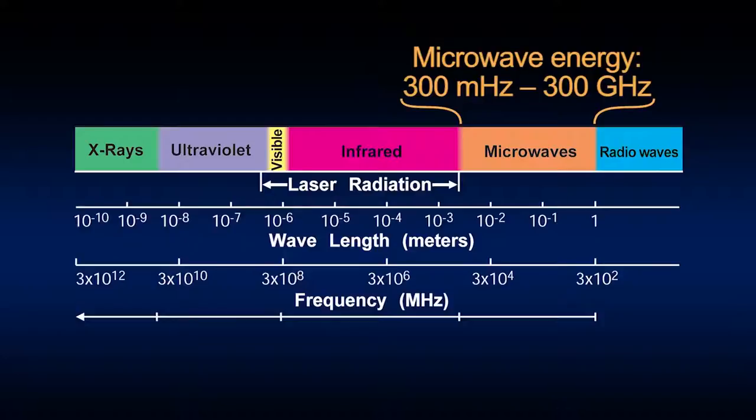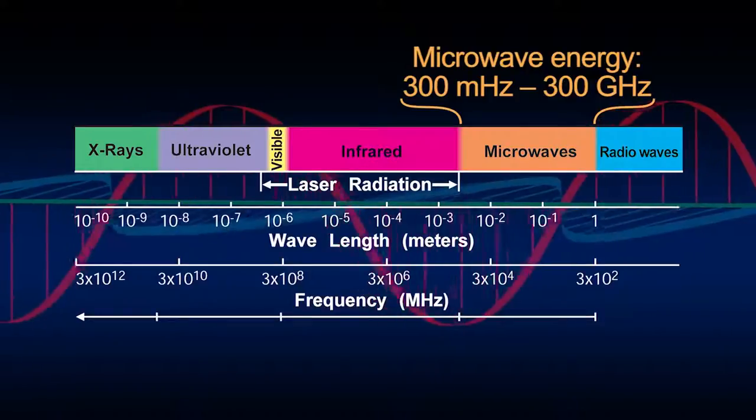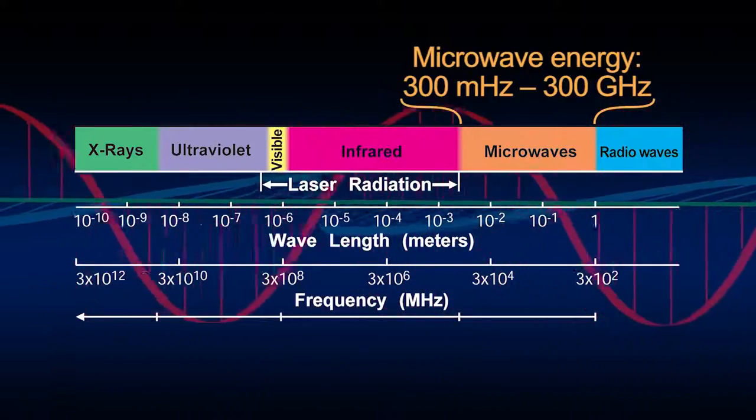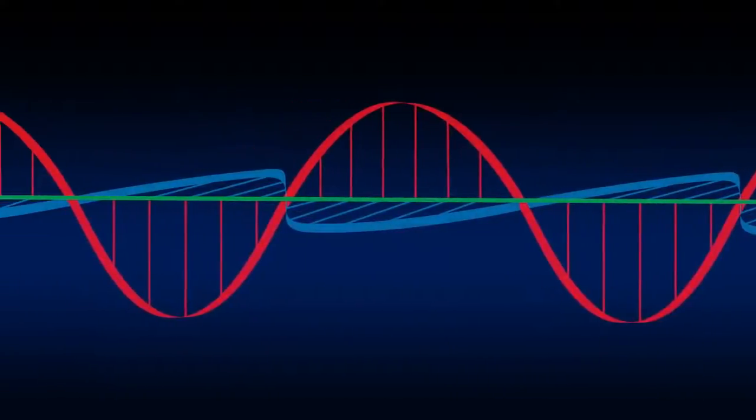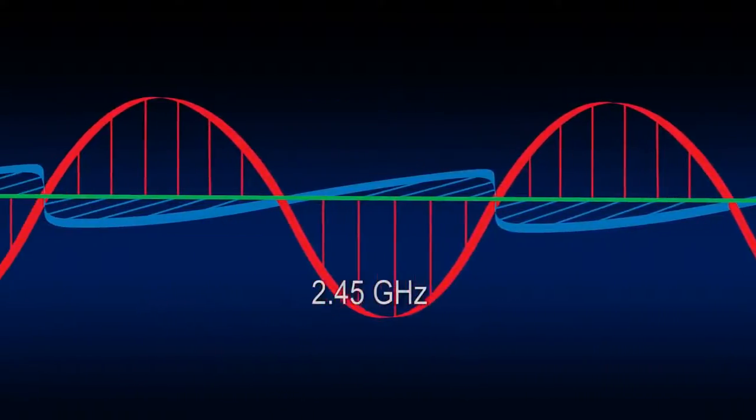Microwave energy is at the lower end of the electromagnetic spectrum and is defined as the 300 megahertz to about 300 gigahertz frequency range. The FCC and other governmental regulatory bodies allow use of only a handful of frequencies for industrial, scientific, or medical applications.